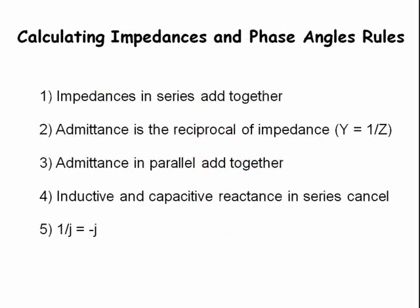Now let's get some practice working with impedance, admittance, and phase angles using the following rules. Number 1: Impedances in series add together. Number 2: Admittance is the reciprocal of impedance, that is, Y equals 1 over Z. Number 3: Admittances in parallel add together. Number 4: Inductive and capacitive reactants in series cancel. And number 5: 1 over J equals minus J.